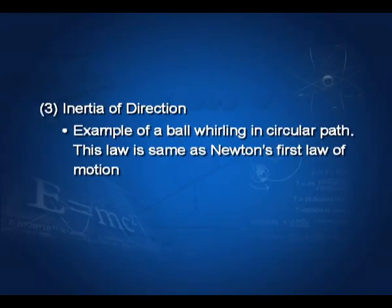The third type is inertia of direction, which states that any object moving in a straight line opposes any change in its direction. For example, if an object is tied with a string and being whirled on a circular path, when you release the string the body moves in a straight line — it will not change its direction anymore.